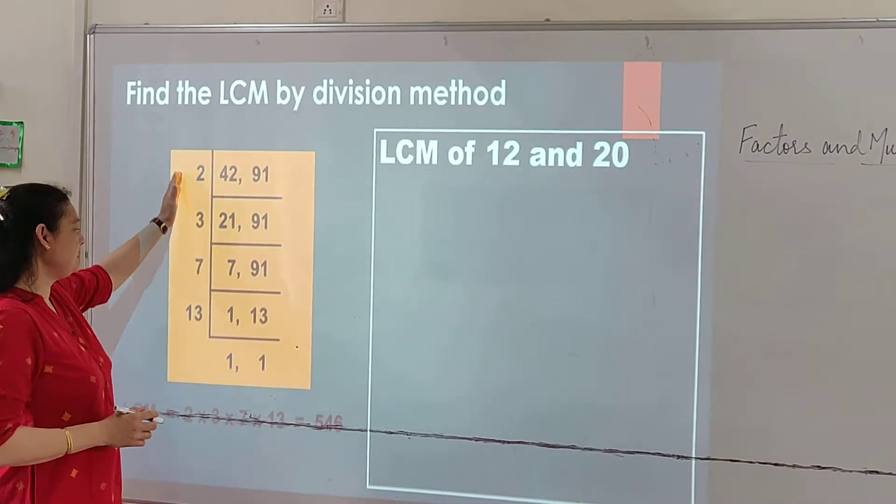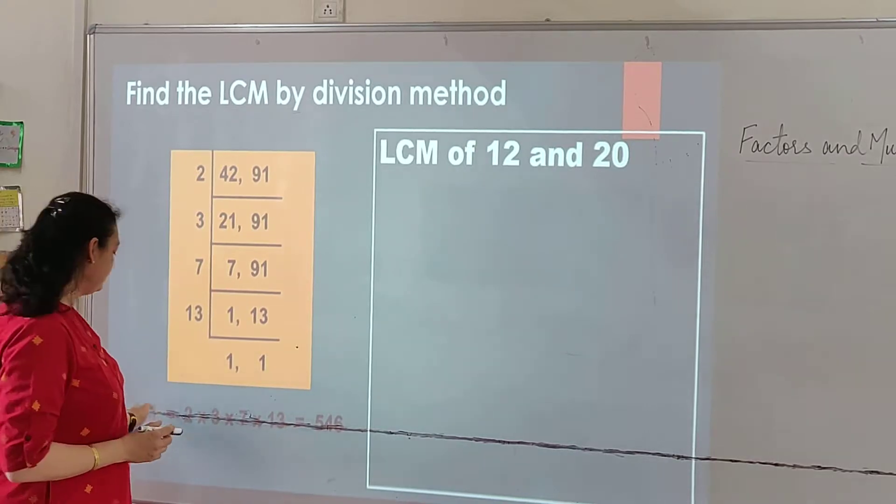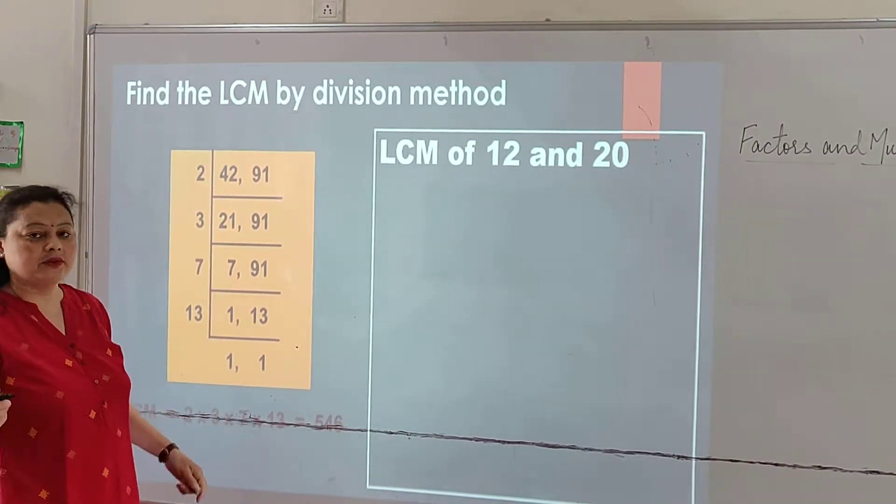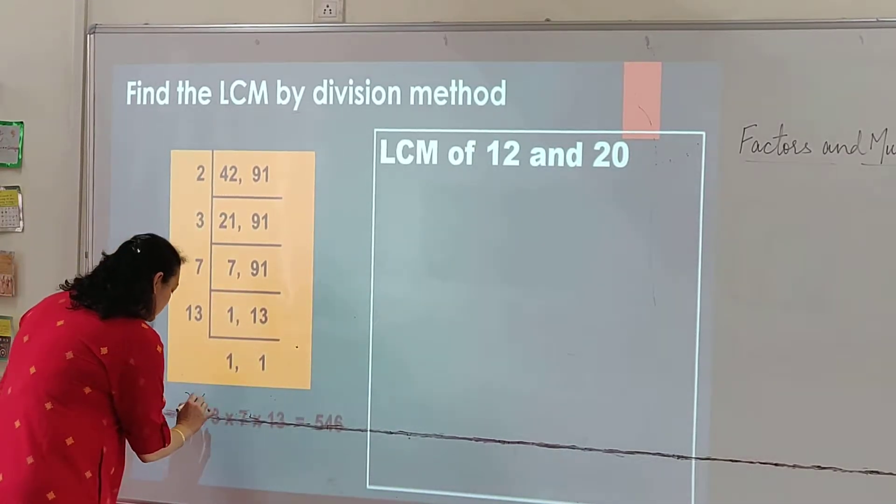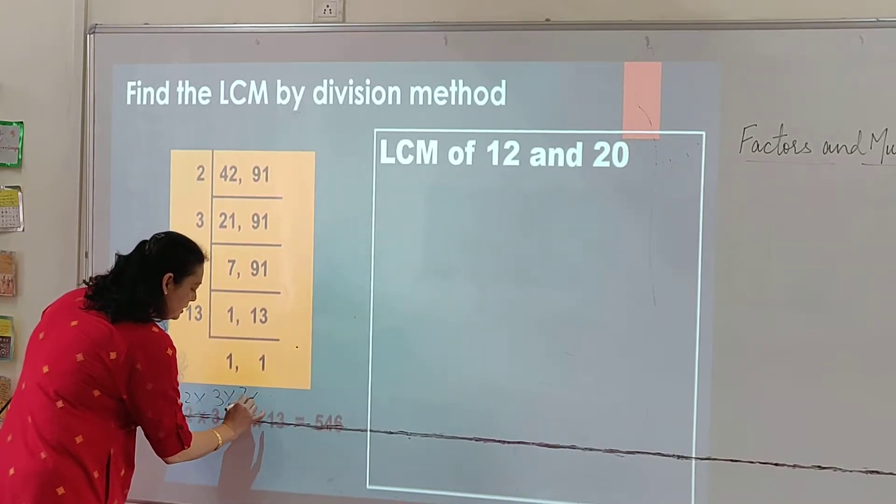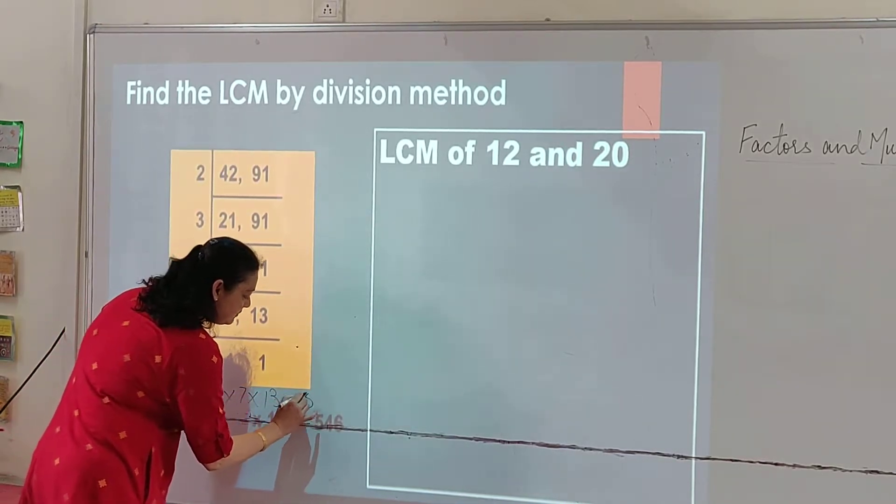Now the multiple, we will write all this. And we will find out the LCM: 2 into 3 into 7 into 13, and the answer is 546.